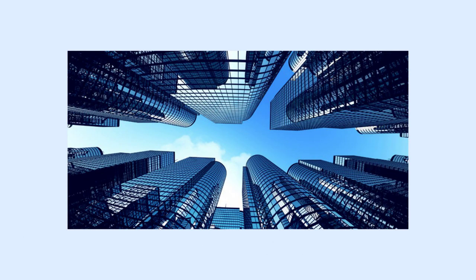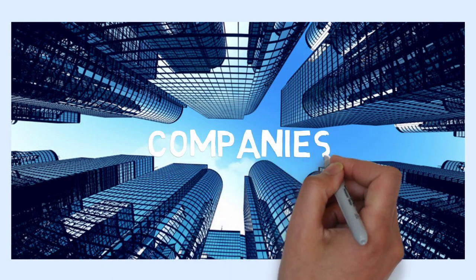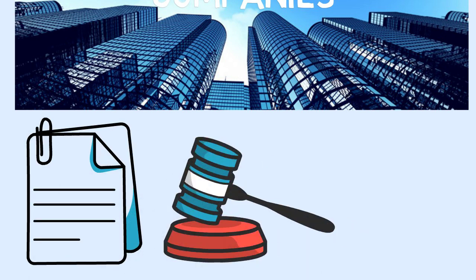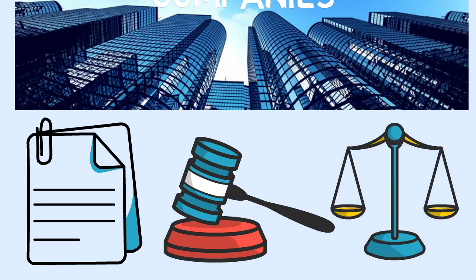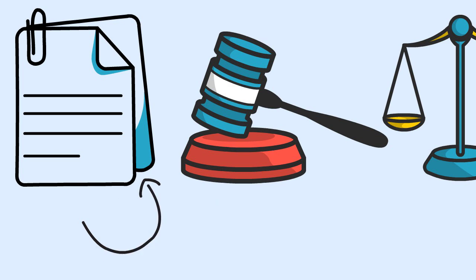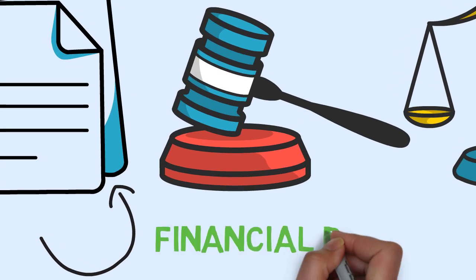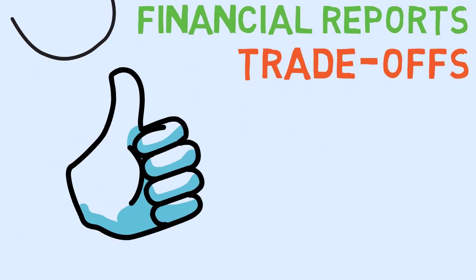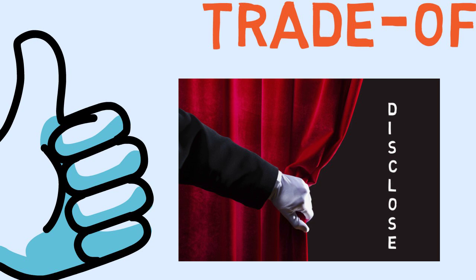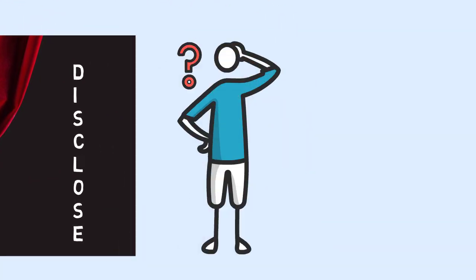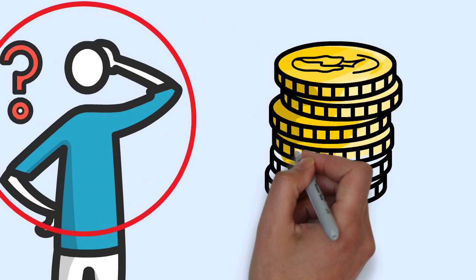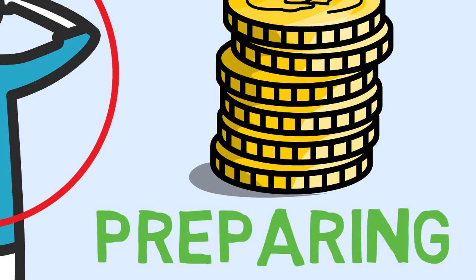Full Disclosure Principle: The full disclosure principle states that companies should provide information that is of sufficient importance to influence the judgment and decisions of an informed user. The full disclosure principle recognizes that the information included in financial reports reflects judgment and trade-offs. These trade-offs attempt to provide sufficient detail while providing sufficient condensation so that the information is understandable, keeping in mind the costs of preparing and using the information.